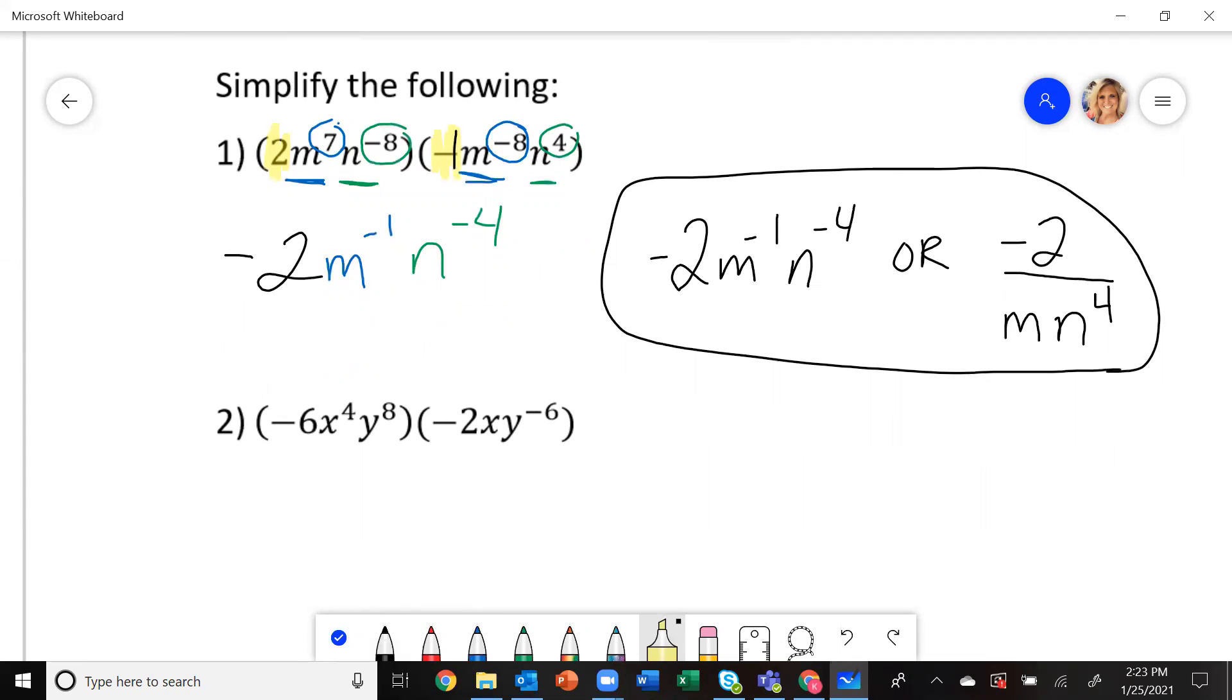So first you're going to multiply the coefficients right here, which is going to give you positive 12.